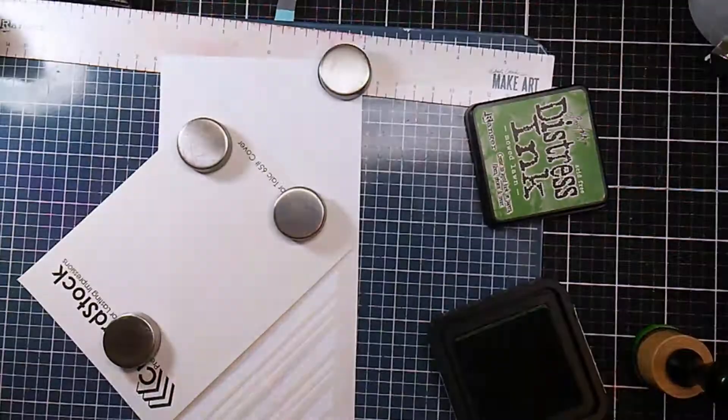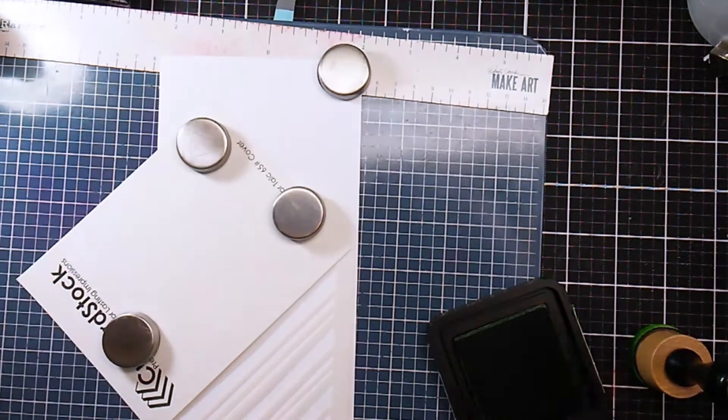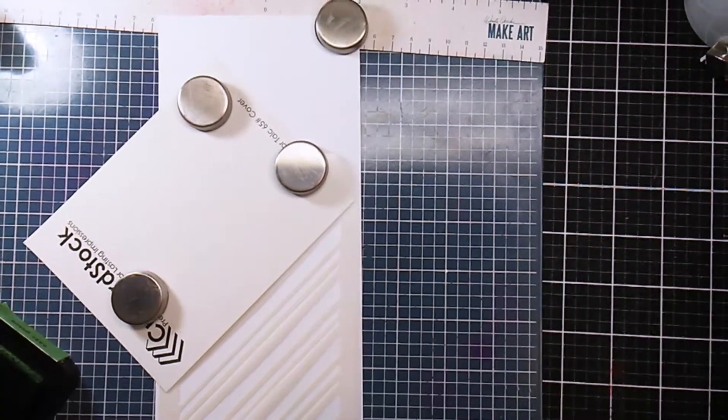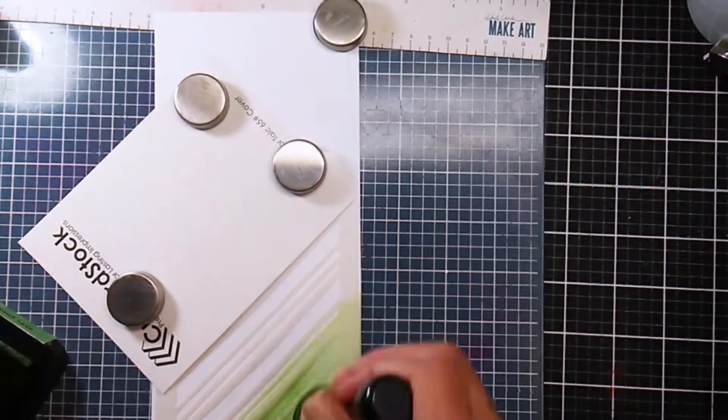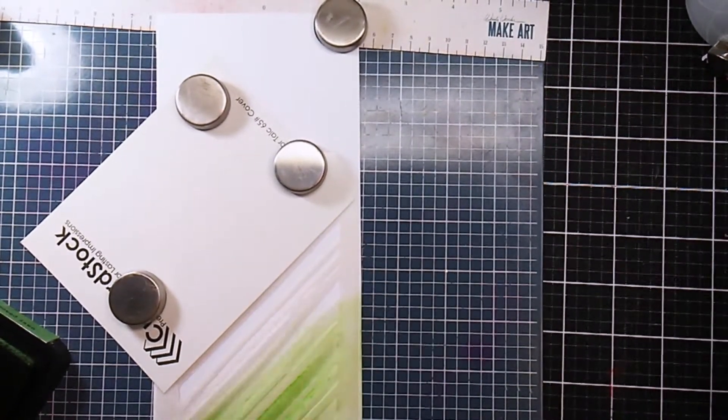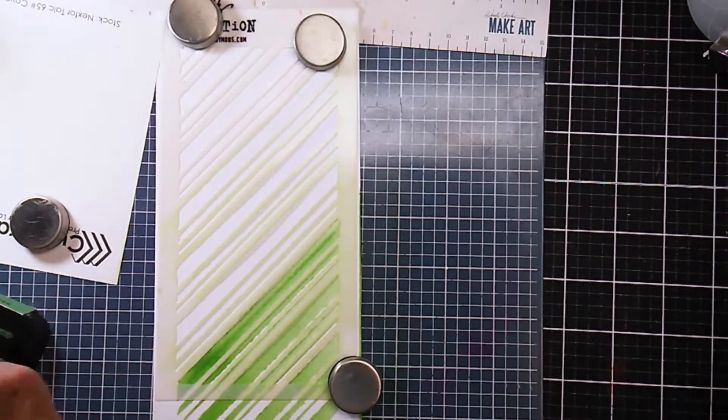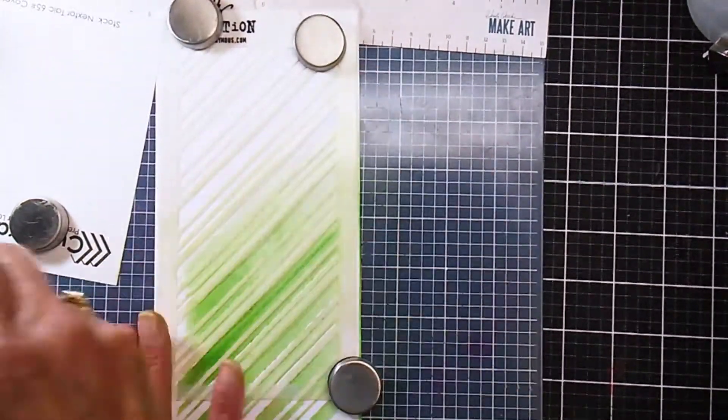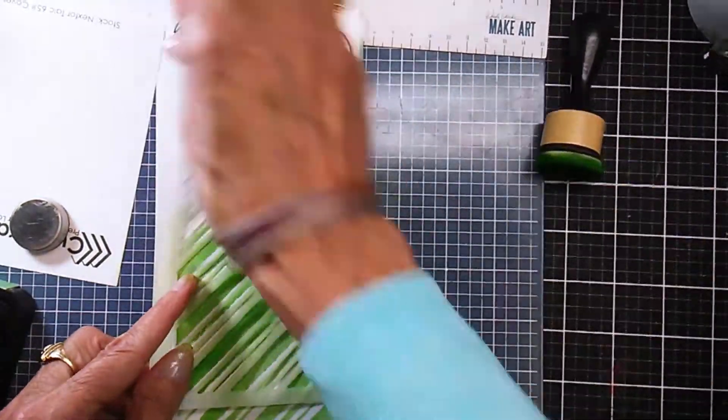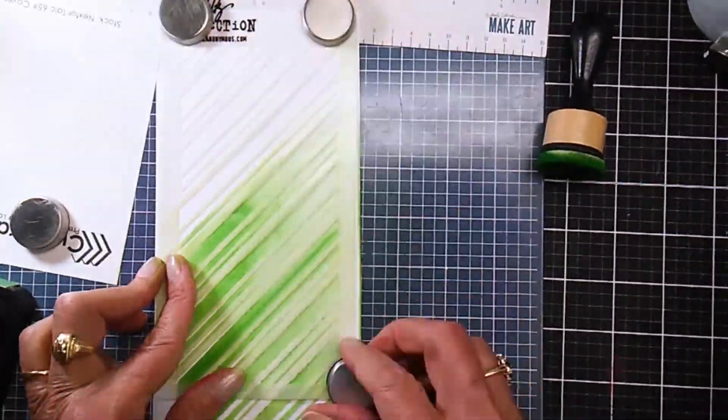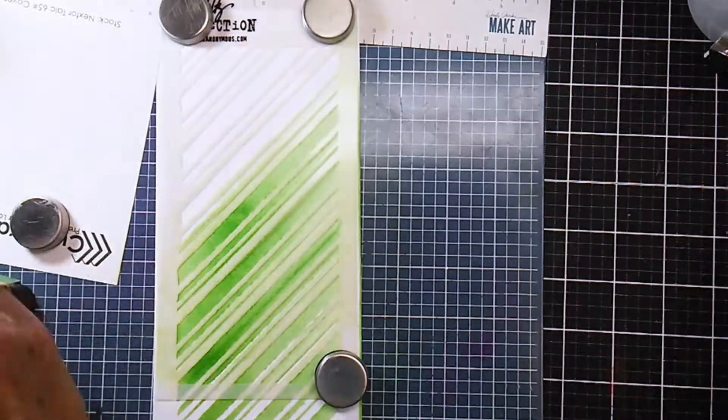I'm using a diagonal striped stencil, it's a Tim Holtz product, and using his Mowed Lawn Distress Ink and I am ink blending the stripes on here. I ended up doing both a green and a red because I wasn't sure which one I was going to use and I do show you both of them here in a short minute.